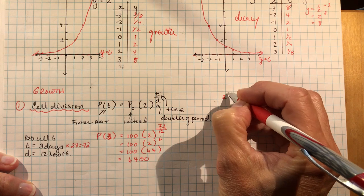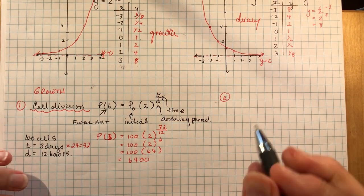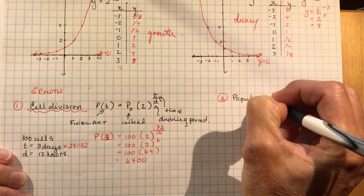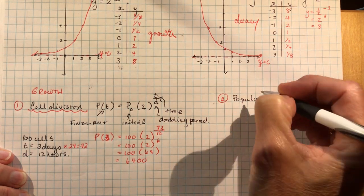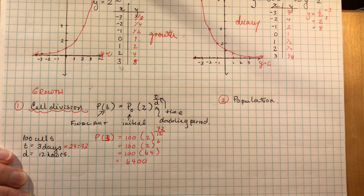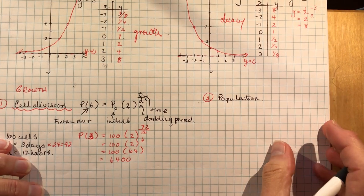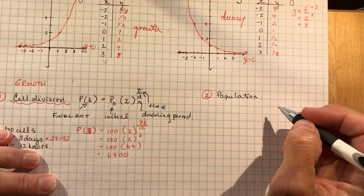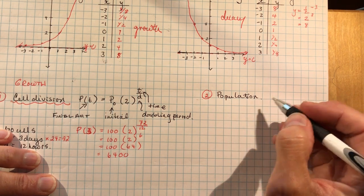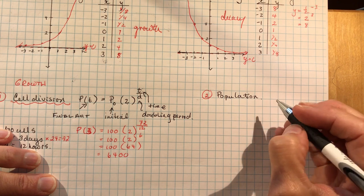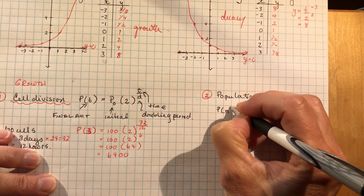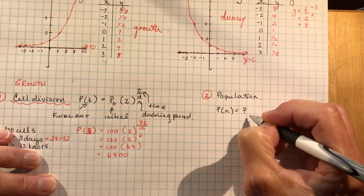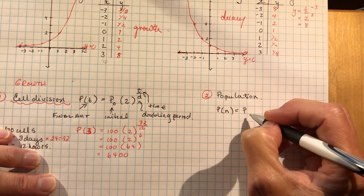A second example, pretty similar to it, is a population question. Population growth. So generally populations grow, unless of course you're in a town that's becoming a ghost town, or there's some sort of decline in the population because of loss of jobs or something like that. But generally populations grow. So you have the population at some time, they like to change the numbers. It could be population at time t.